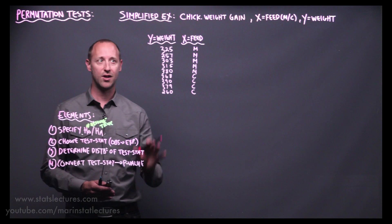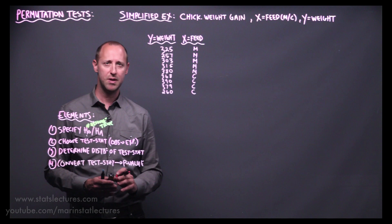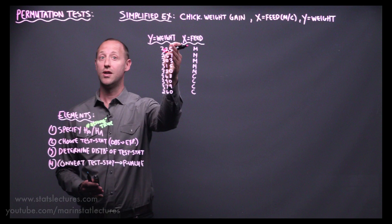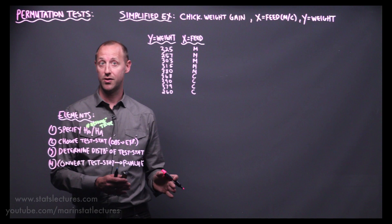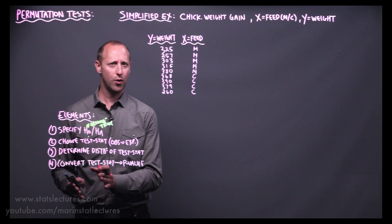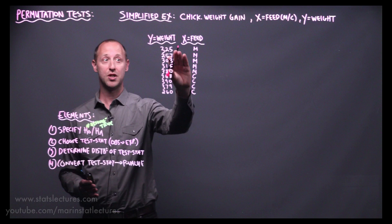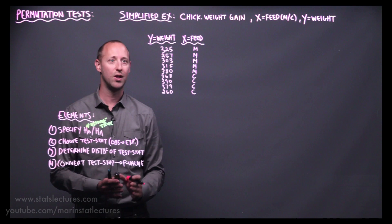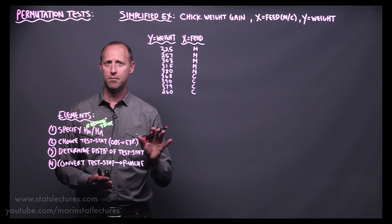The question we want to get at is: do these two diets differ? Is the weight gain under one different than the other? We need to be specific about what we mean by differ — are we comparing the mean weights, the median weights, or maybe the lower tail of the distribution, say the 10th percentile? At the lower end, the really light chickens — is the 10th percentile much higher for one feed type? Maybe we want to make sure we're pulling up that lower tail of the distribution for one diet compared to the other.